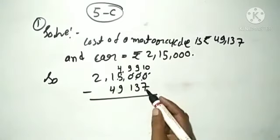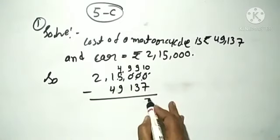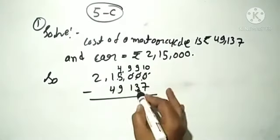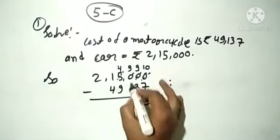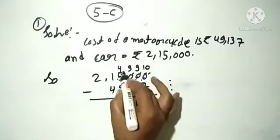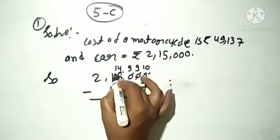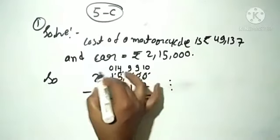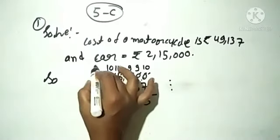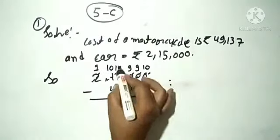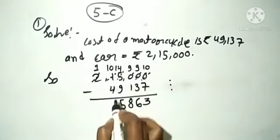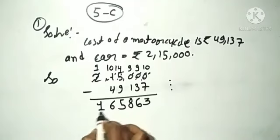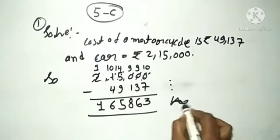9 minus 3 is 6, 9 minus 1 is 8. Here we have 14, here we have 0, then here we have 10, here we have 1. So 14 minus 9 is 5, 10 minus 4 is 6, then 1 is 1. So this is what we have as the answer.